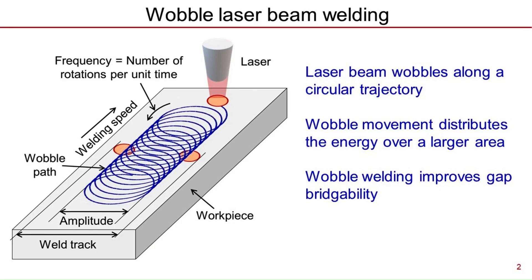During wobble welding, the laser beam wobbles or oscillates along a circular trajectory. The circular movement of the beam distributes the laser energy over a large area, affects the fusion zone geometry, and improves gap bridgeability.